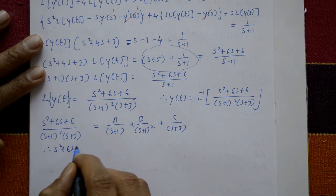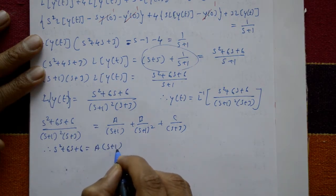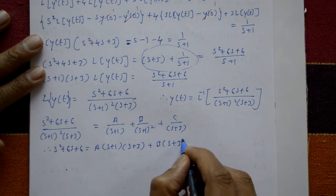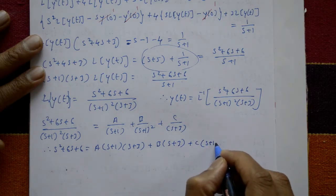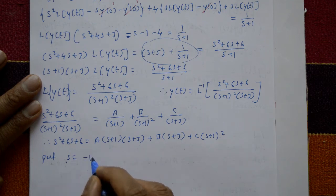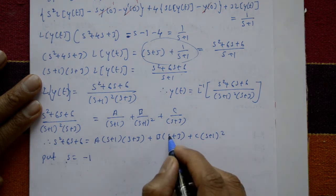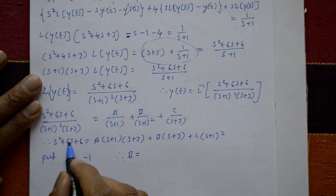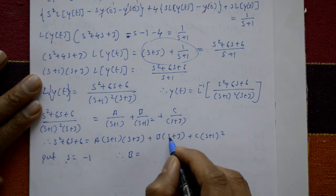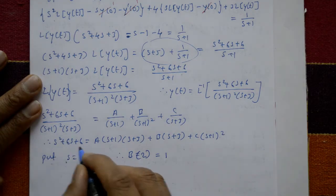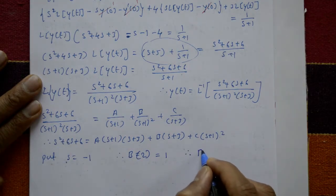The remaining numerator equation is s squared plus 6s plus 6 equals A into s plus 1 into s plus 3 plus B into s plus 3 plus C into s plus 1 whole squared. Putting s equal to minus 1: minus 1 plus 3 is 2, so B times 2 equals minus 1 plus 6 minus 6, giving 1 upon 2. Therefore B is equal to one half.